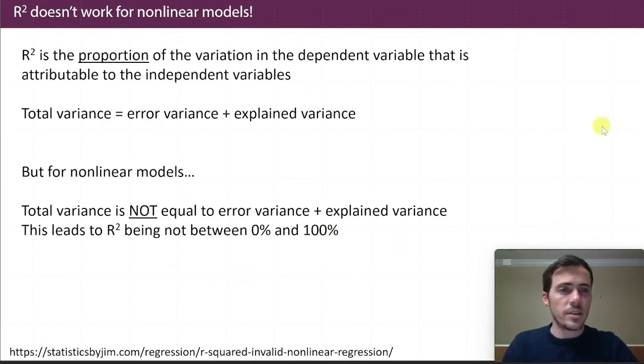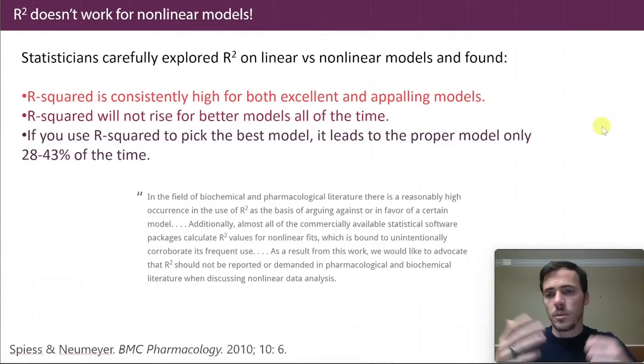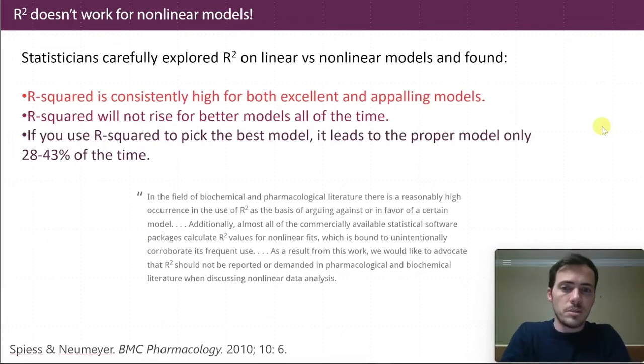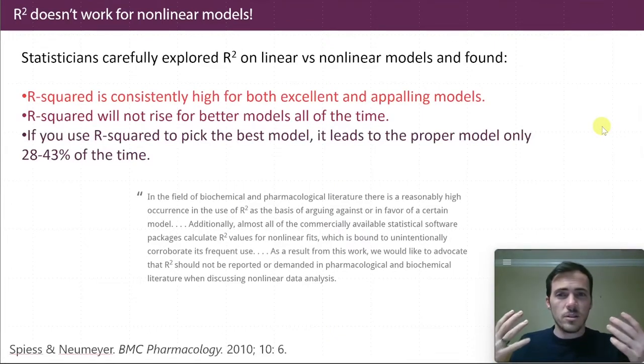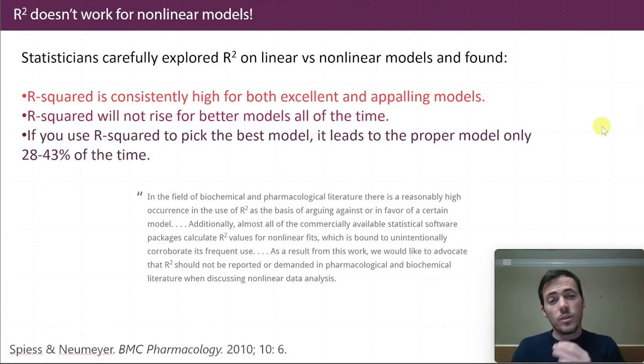This has been pointed out by statisticians who have studied this. For example, check this paper out from 2010 in BMC Pharmacology. So people in the field of pharmacology, you know, they were seeing many people using nonlinear models and then fitting it with R squared, and they just were bugged by that. So they said, look, this is a problem. So they went through and they carefully examined how R squared changes on linear versus nonlinear models on a bunch of different ones. And here's what they found.